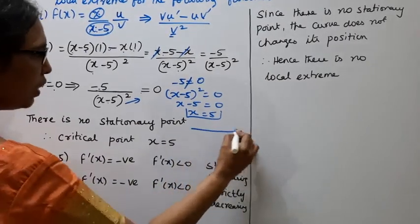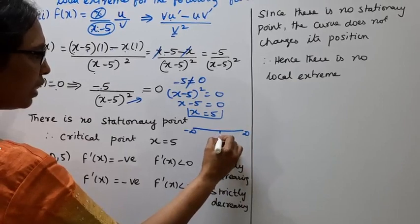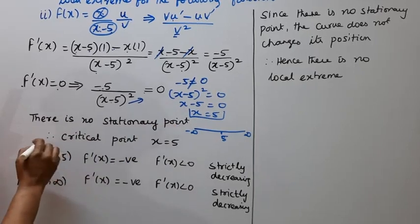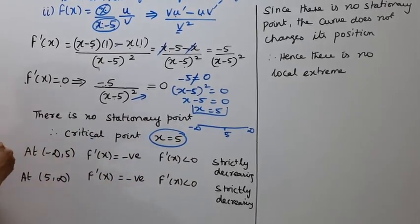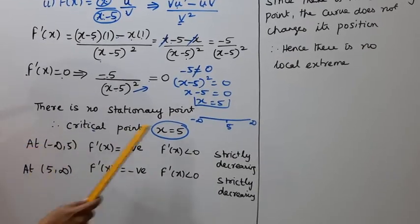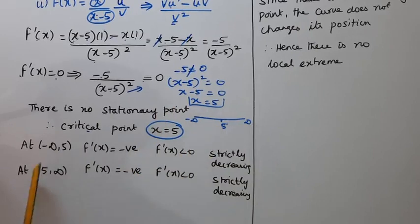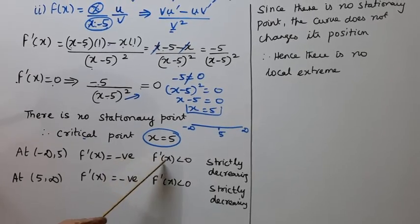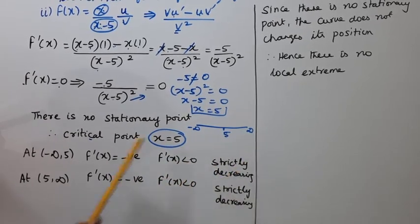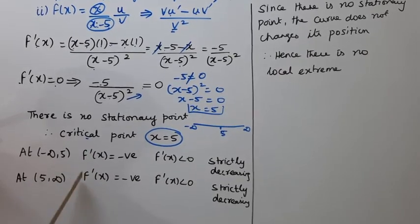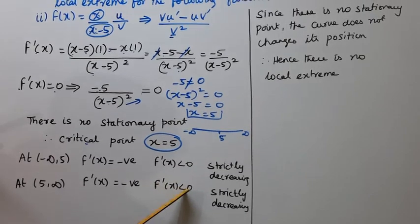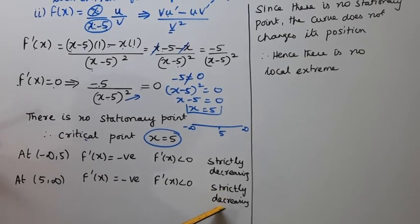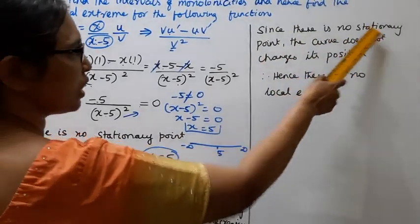The numerator is minus 5, which is never zero, so there is no stationary point. The denominator x minus 5 squared equals zero gives x equal to 5, but x equal to 5 makes the original function undefined. Since f dash of x is always negative, x equal to 0 confirms there is no stationary point.